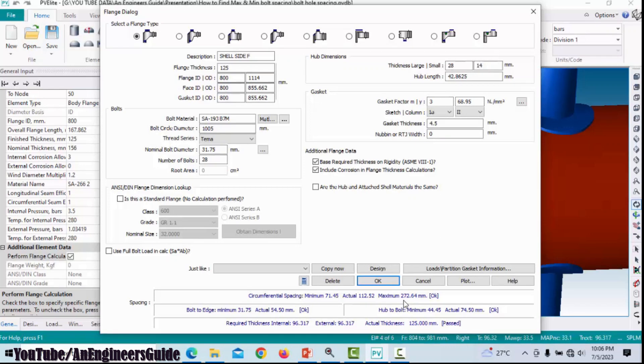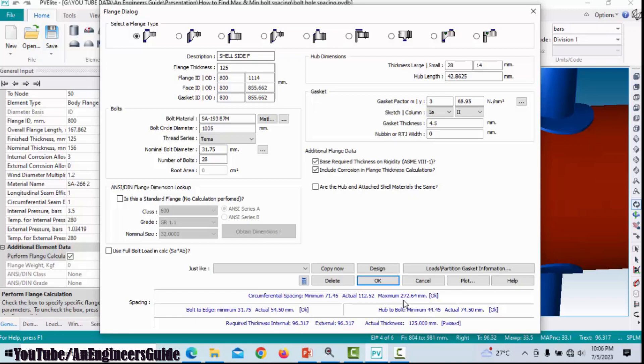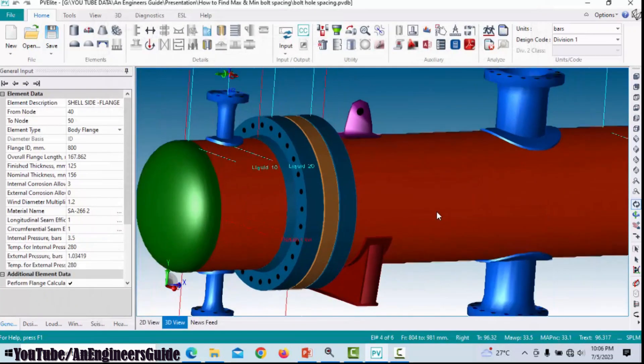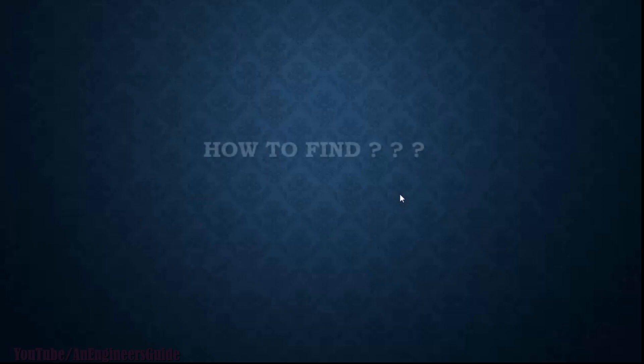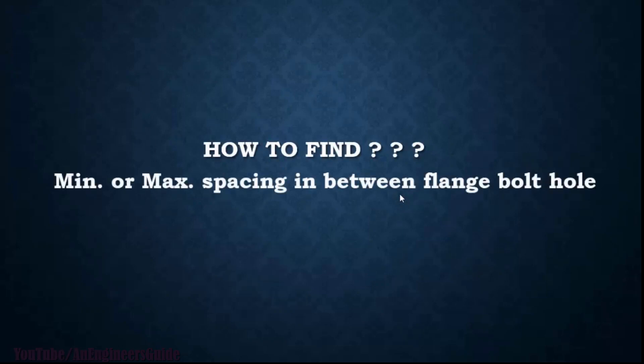In this session we will see how to calculate that minimum and maximum spacing manually. Let's see how to find the minimum and maximum spacing between the flange bolt holes.